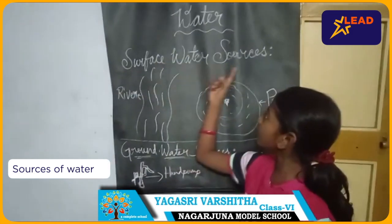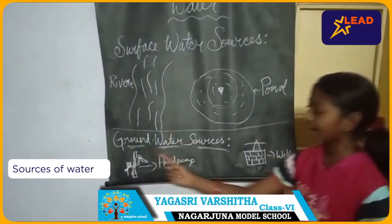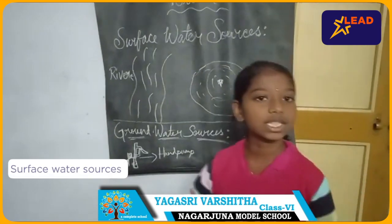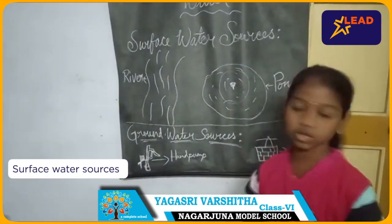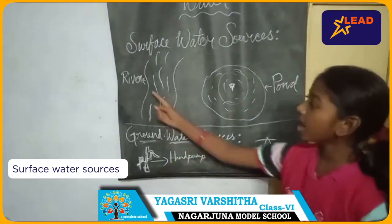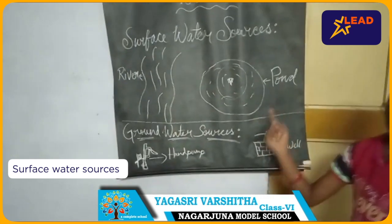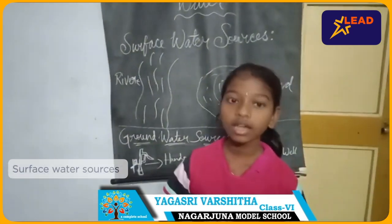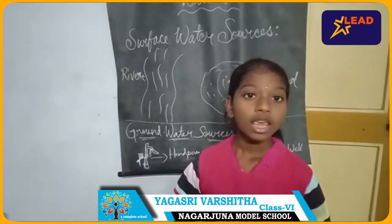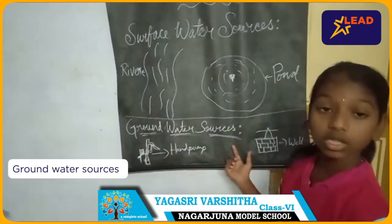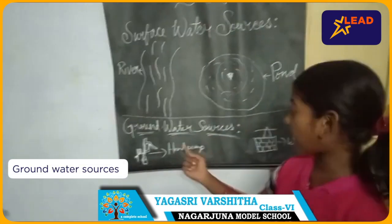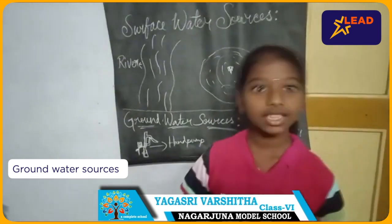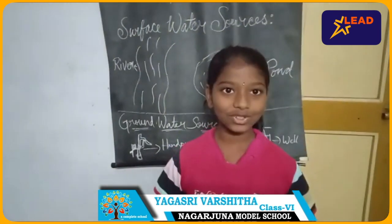There are two types of water sources: surface water sources and groundwater sources. Examples of surface water sources are rivers, ponds, and lakes. Examples of groundwater sources are hand pumps and wells.